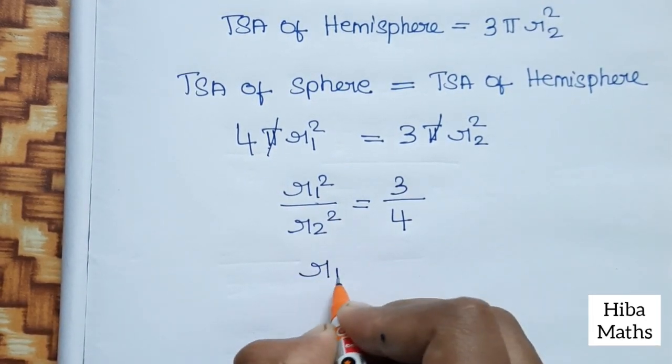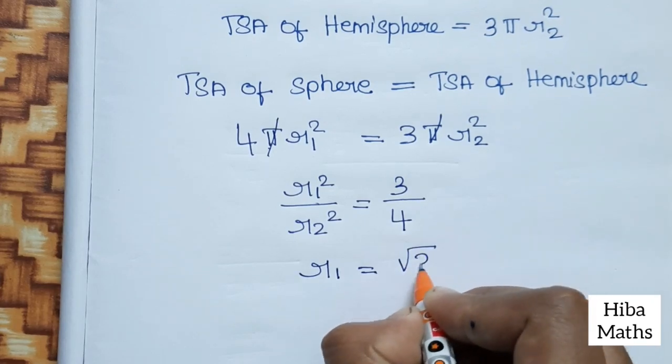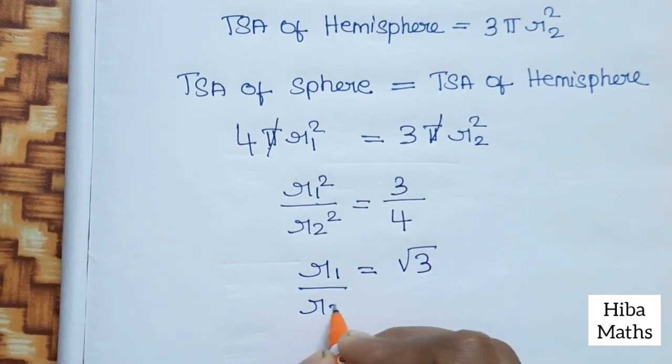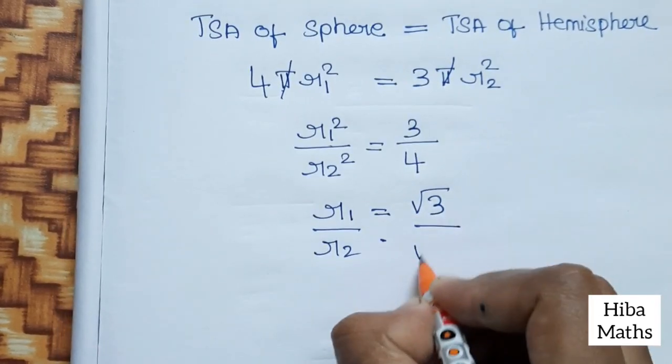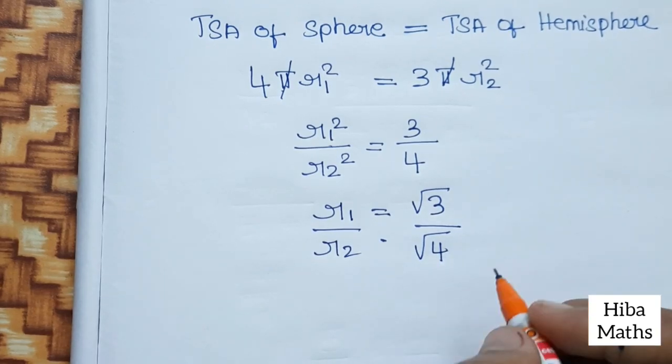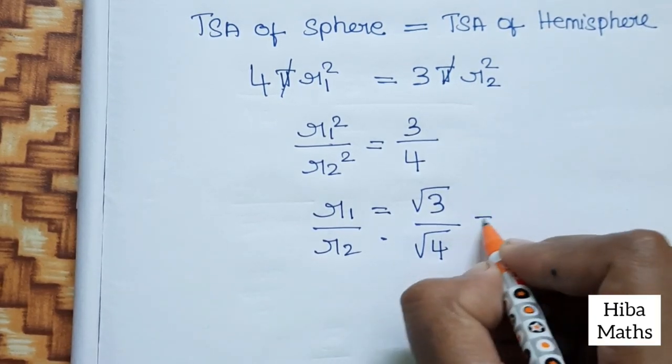We take square root of both sides. So R₁² by r₂² equals 3 by 4.